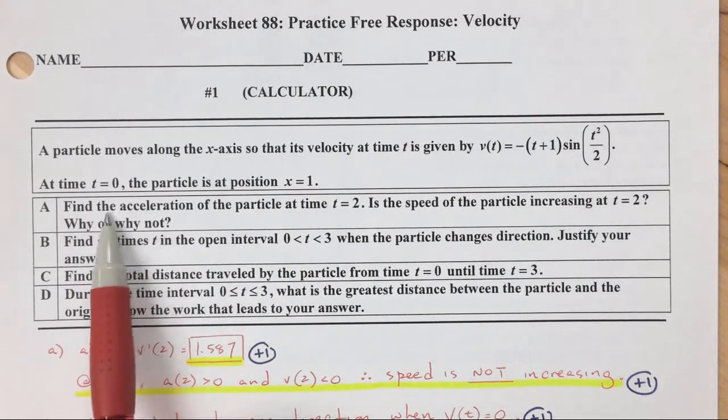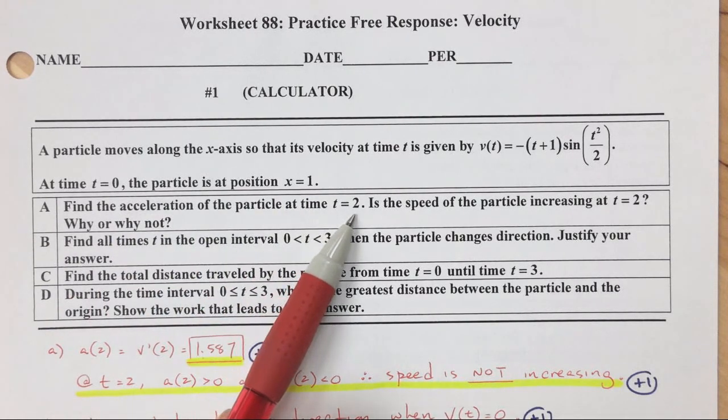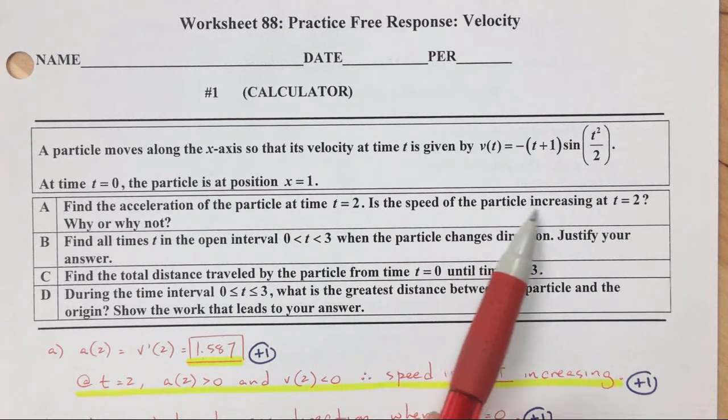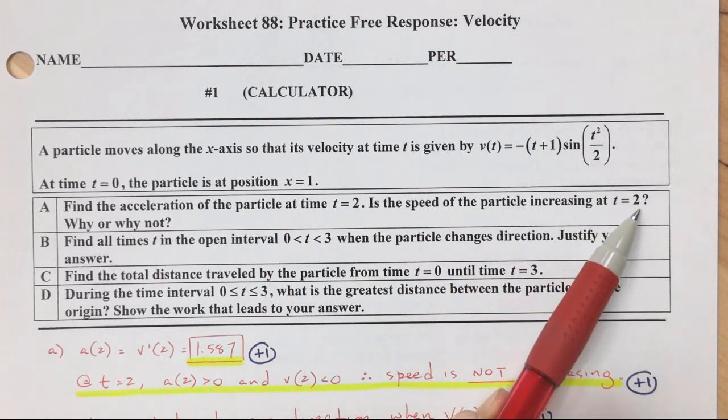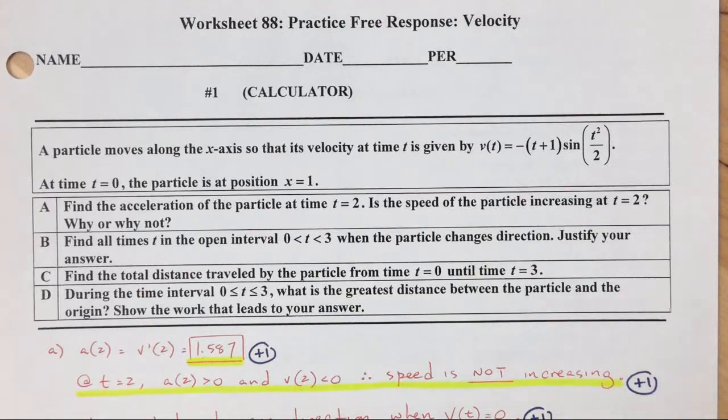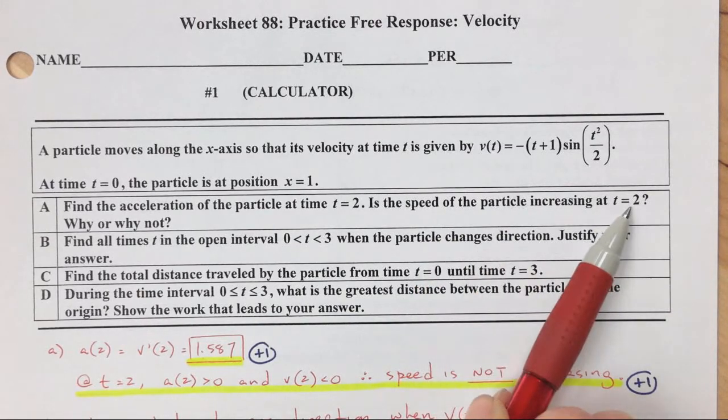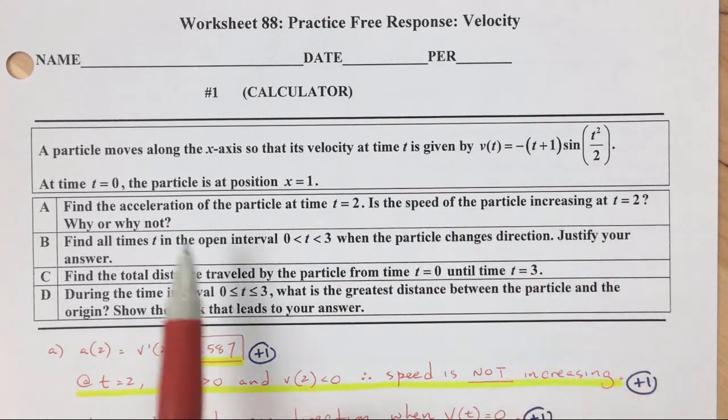Okay, A, find the acceleration of the particle at time equals 2. Is the speed of the particle increasing at t equals 2? Why or why not? So when we answered this one, we need a reasoning behind it as well.